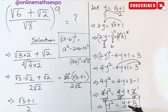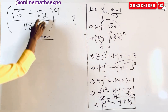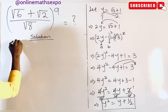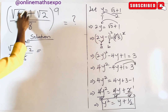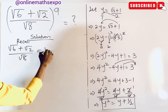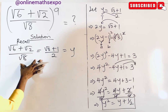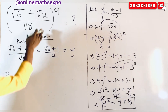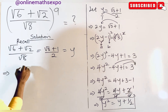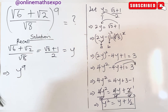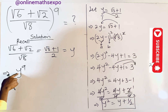Recall that the inside value, which is (root six plus root two) over root eight, simplified to (root three plus one) over two, which we called y. So the whole expression inside is now replaced with y, and we need to evaluate y to the power of nine.